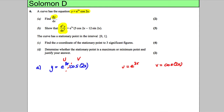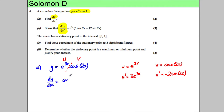Therefore u' is equal to 3e to the power of 3x, and v' is equal to negative 2 sine 2x — differentiating inside the cos gives 2, and the differential of cos 2x is negative sine 2x. Stating the product rule: dy/dx equals u·v' plus v·u'. So u·v' gives negative 2e to the 3x sine 2x.